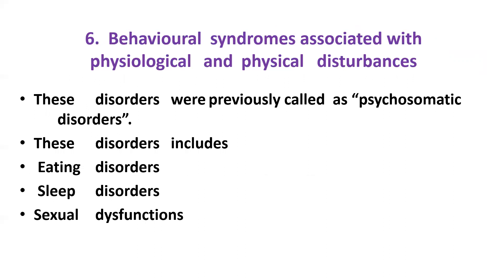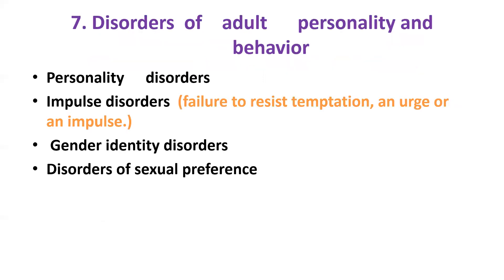The sixth category is behavioral syndromes associated with physiological and physical disturbances. These disorders were previously called psychosomatic disorders and include eating disorders, sleep disorders, and sexual dysfunction. The seventh one is disorders of adult personality and behavior, which includes personality disorders, impulse disorders, failure to resist temptation or an impulse, gender identity disorders, and disorders of sexual preferences.